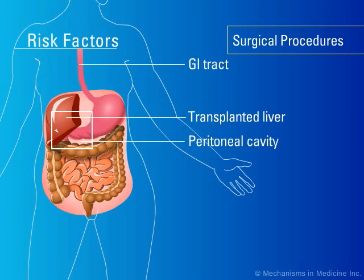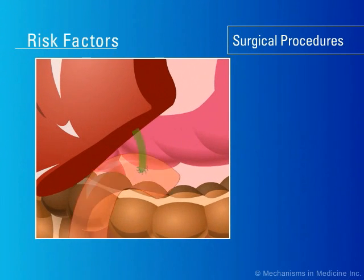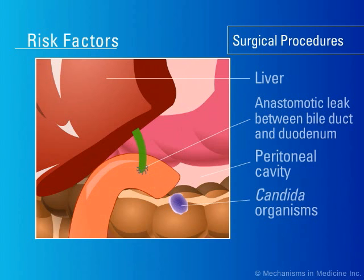Another predisposing risk factor for candidemia and invasive candidiasis is certain surgical procedures such as liver transplantation. In a liver transplant, the new transplanted liver is anastomosed to the duodenum. Because the gastrointestinal tract is colonized with Candida microorganisms, such patients are prone to invasive candidiasis when these organisms leak out of the gastrointestinal tract through bile leaks associated with the anastomosis of the bile duct of the transplanted liver into the duodenal loop.